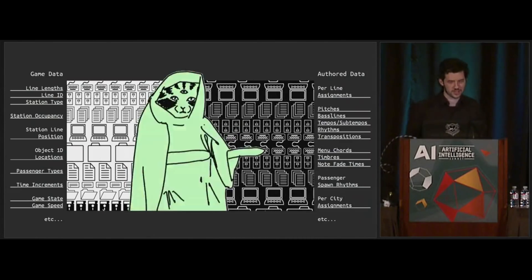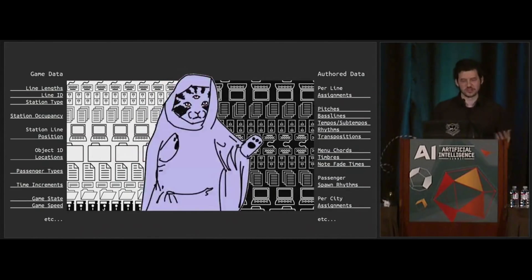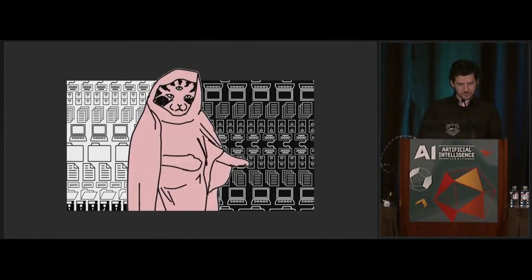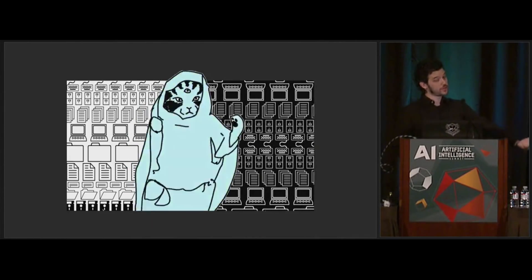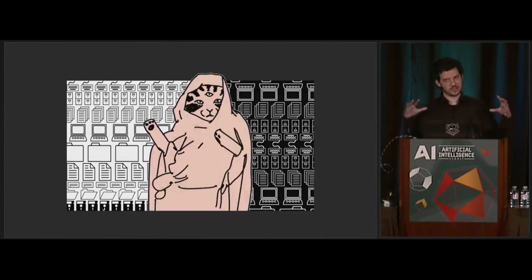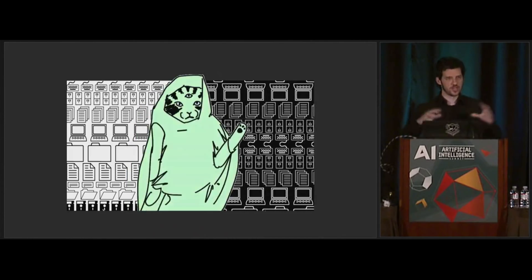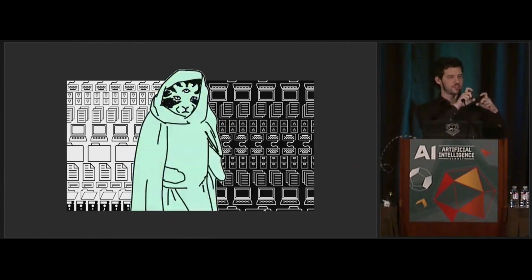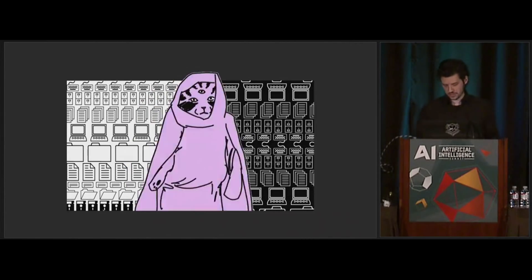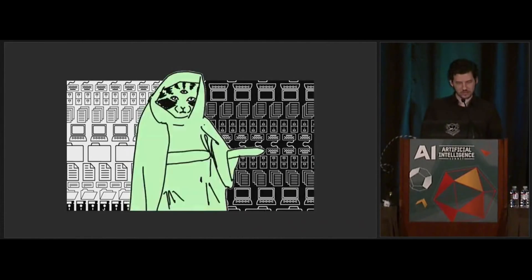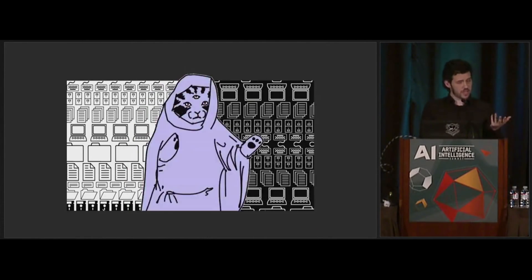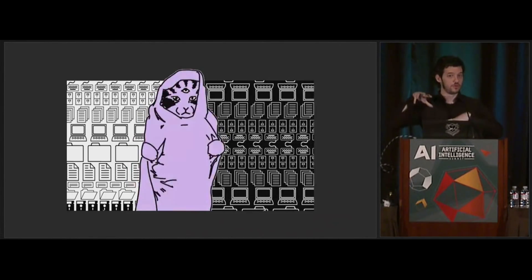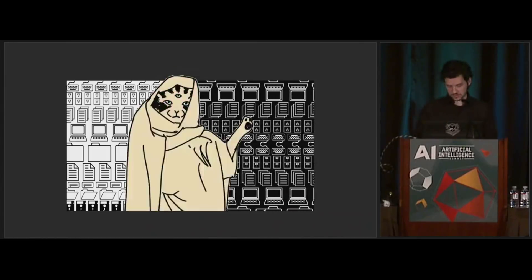Don't try to read all this — just know that there's lots of game data and authored data being fed into the system, all working in tandem. Authored data is often used to steer things in a musical direction, while game data is used to more closely marry things to gameplay — figuring out ways to tie pitch and rhythms to what the player is actually seeing and the feedback we want to give them. In some cases, authored data even made its way into other areas of the game — using the audio system to actually control visuals, for example.